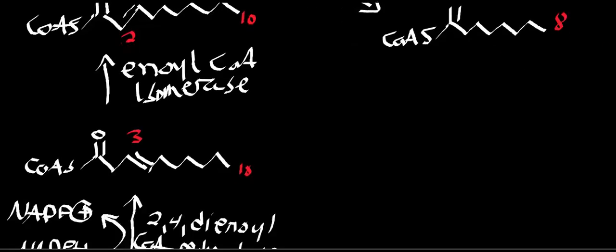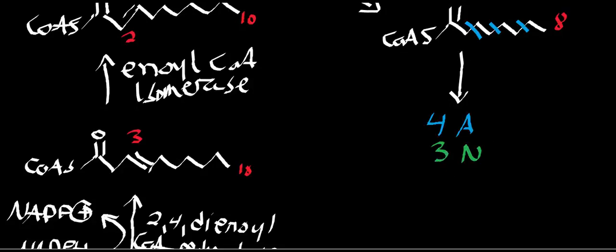From the eight-carbon fatty acid, we do three rounds of beta-oxidation, generating four acetyl-CoA, three NADH, and three FADH2.